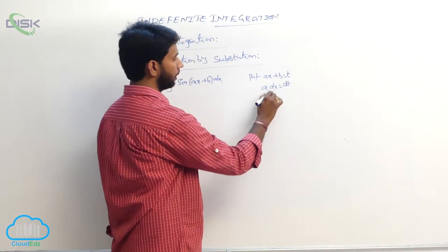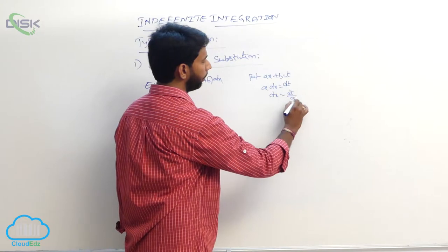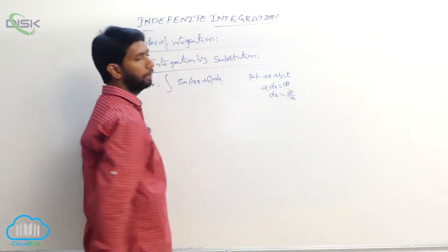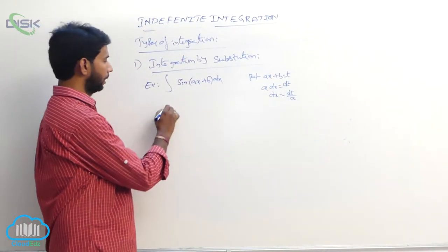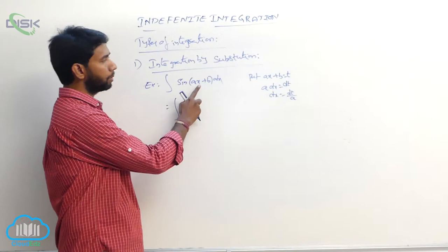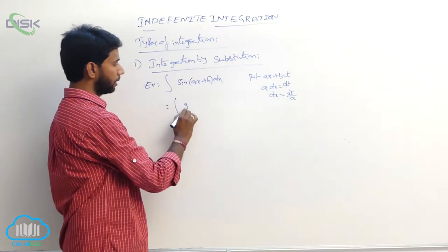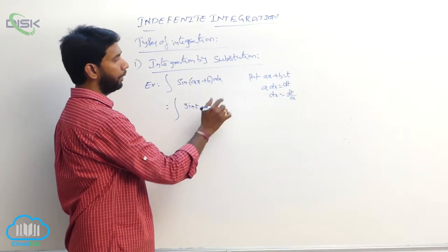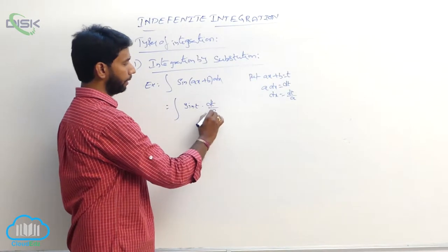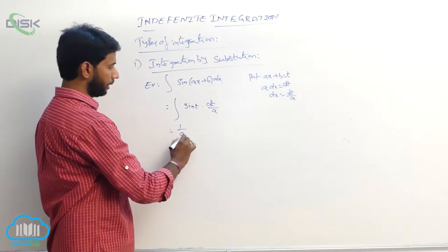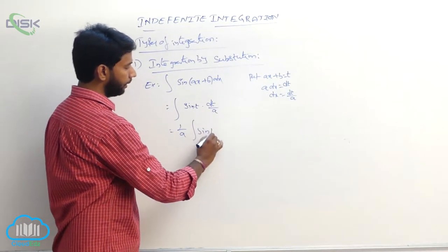Substituting, the integral becomes integral of sin t times dt/a. Since 1/a is a constant, this is (1/a) times integral of sin t dt. Since integral of sin x equals minus cos x, the result is minus (1/a) cos t plus constant.